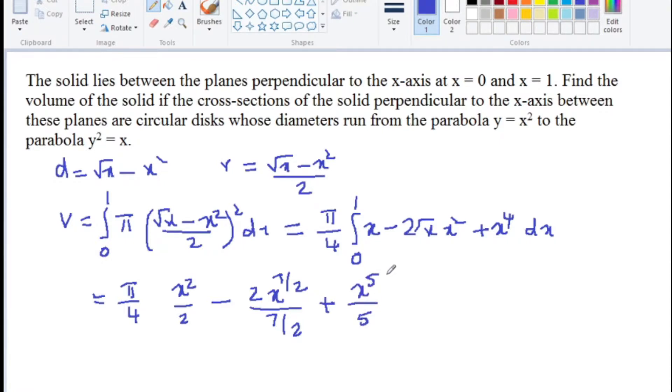From 0 to 1 equal to pi by 4 into: substitute x equals 1, giving 1 by 2 minus 4 by 7 plus 1 by 5.